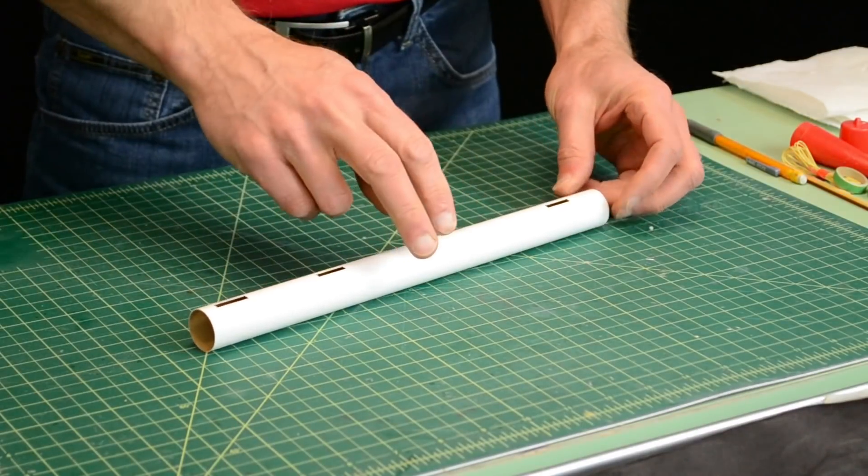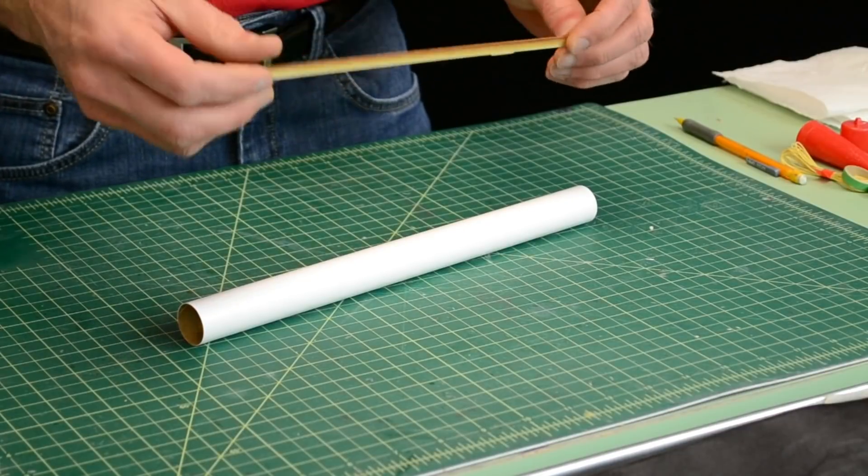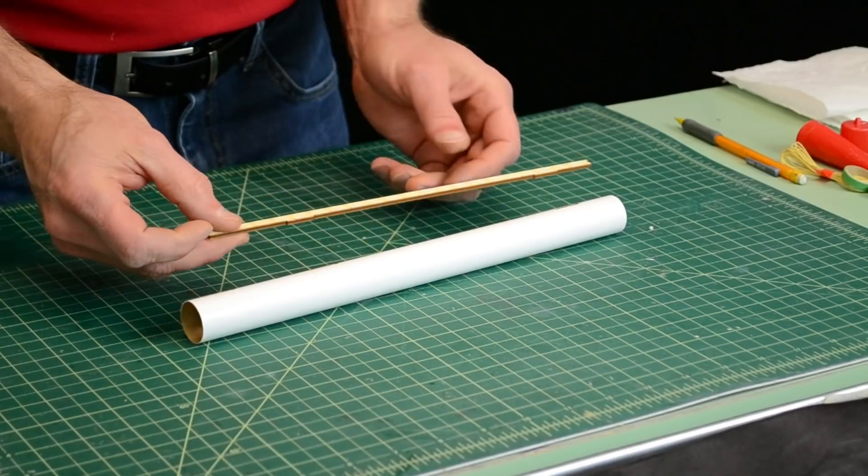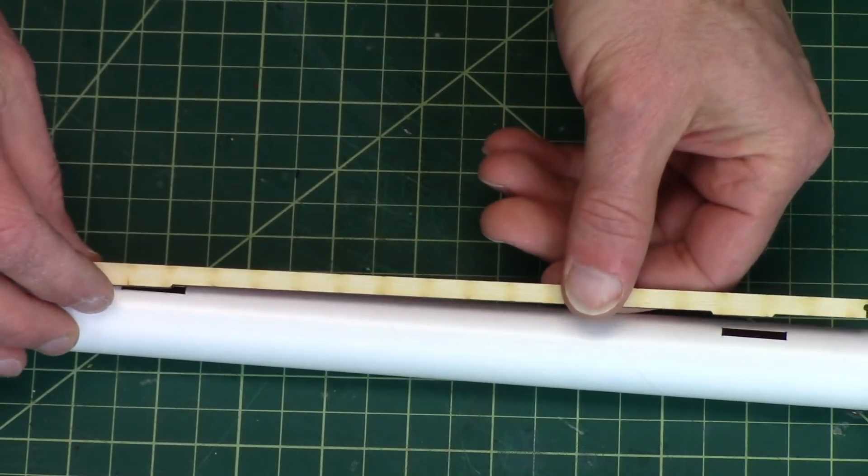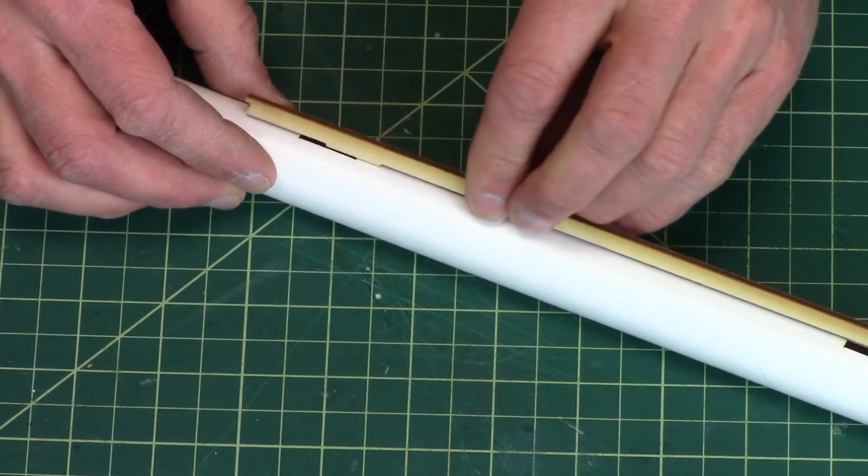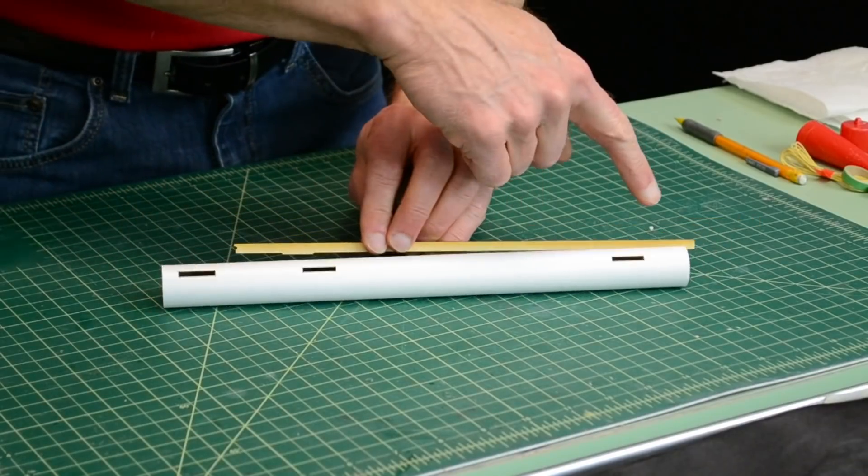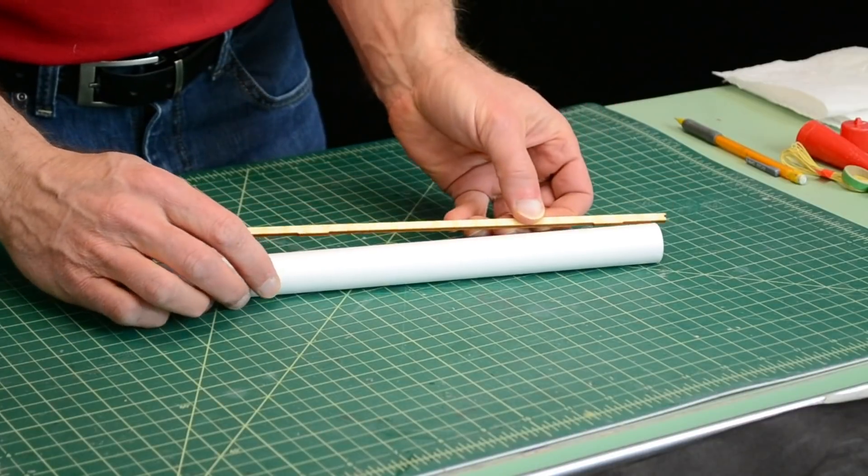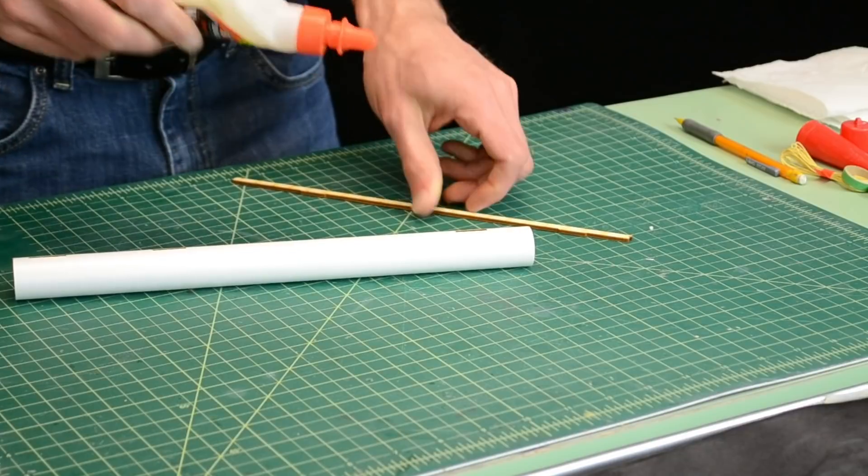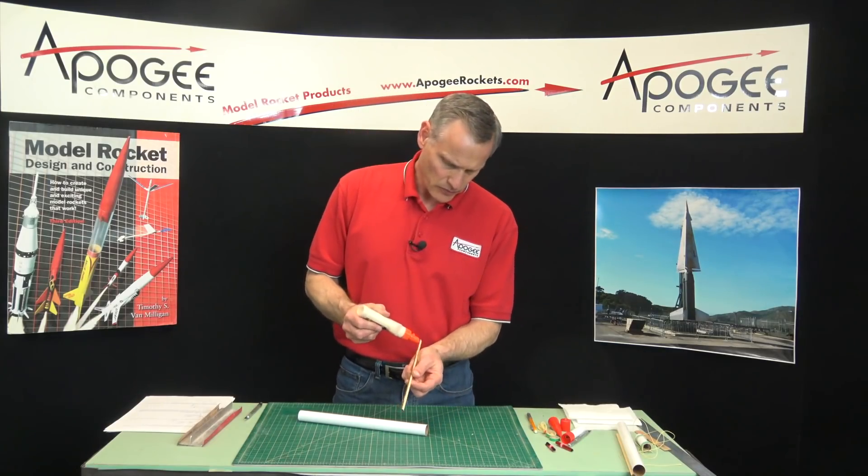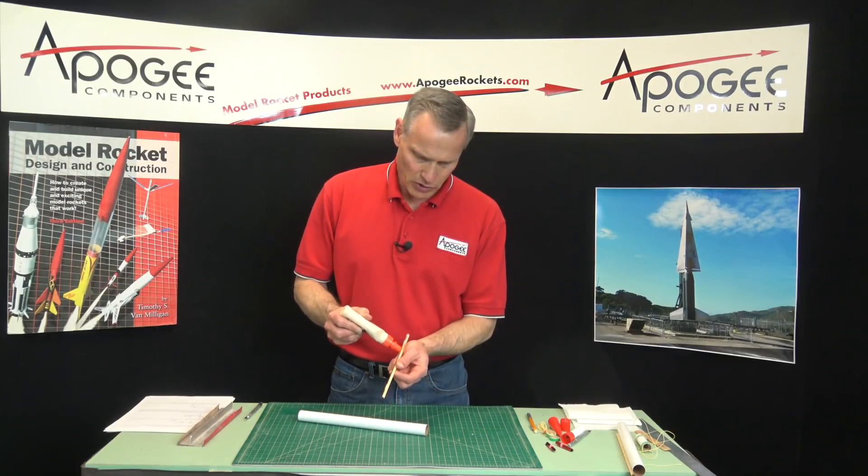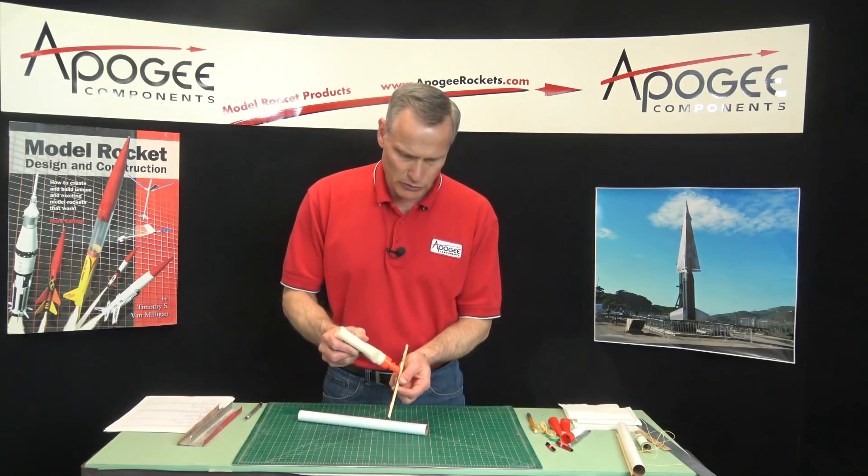We're going to start with the body tube with the slots in it, and then from the parts find the wooden support. This will get glued into the slots like this. Now it will only go one direction. If you put it in the wrong way, it's going to hang over the edge. Just use wood glue for this, and this is just like gluing on a fin. You want to use the glue very sparingly.